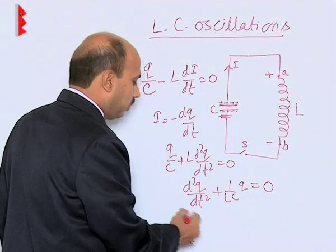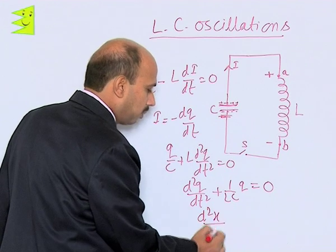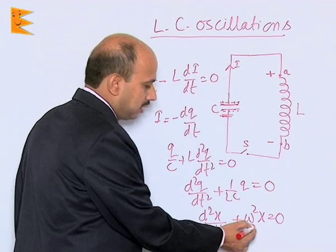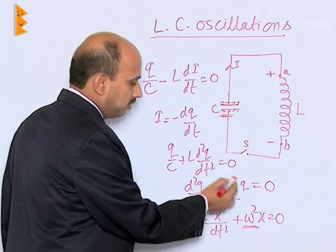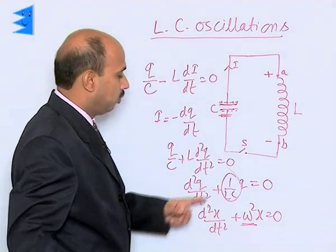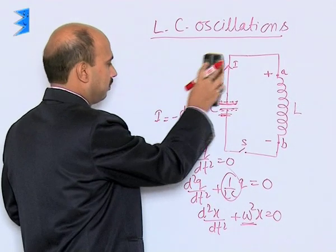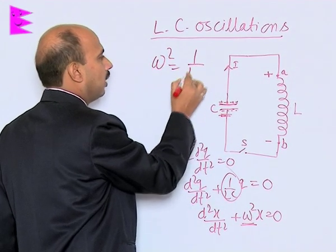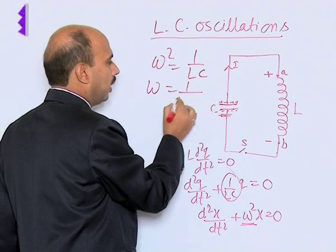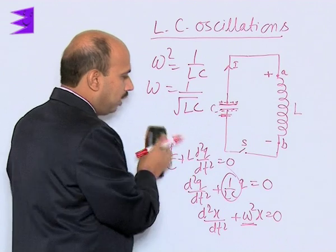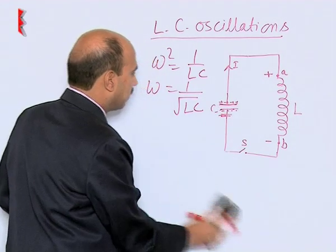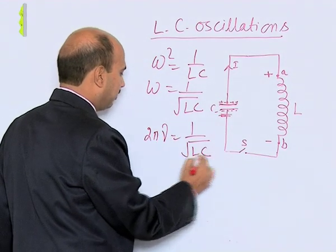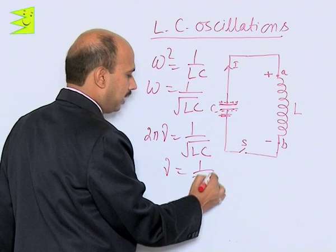We can compare this with the equation of mechanical oscillation: d²x/dt² + ω²x = 0, where ω is the angular frequency. Similarly here, ω² = 1/LC, so ω = 1/√(LC). We can also write: 2πν = 1/√(LC), therefore ν = 1/(2π√(LC)).